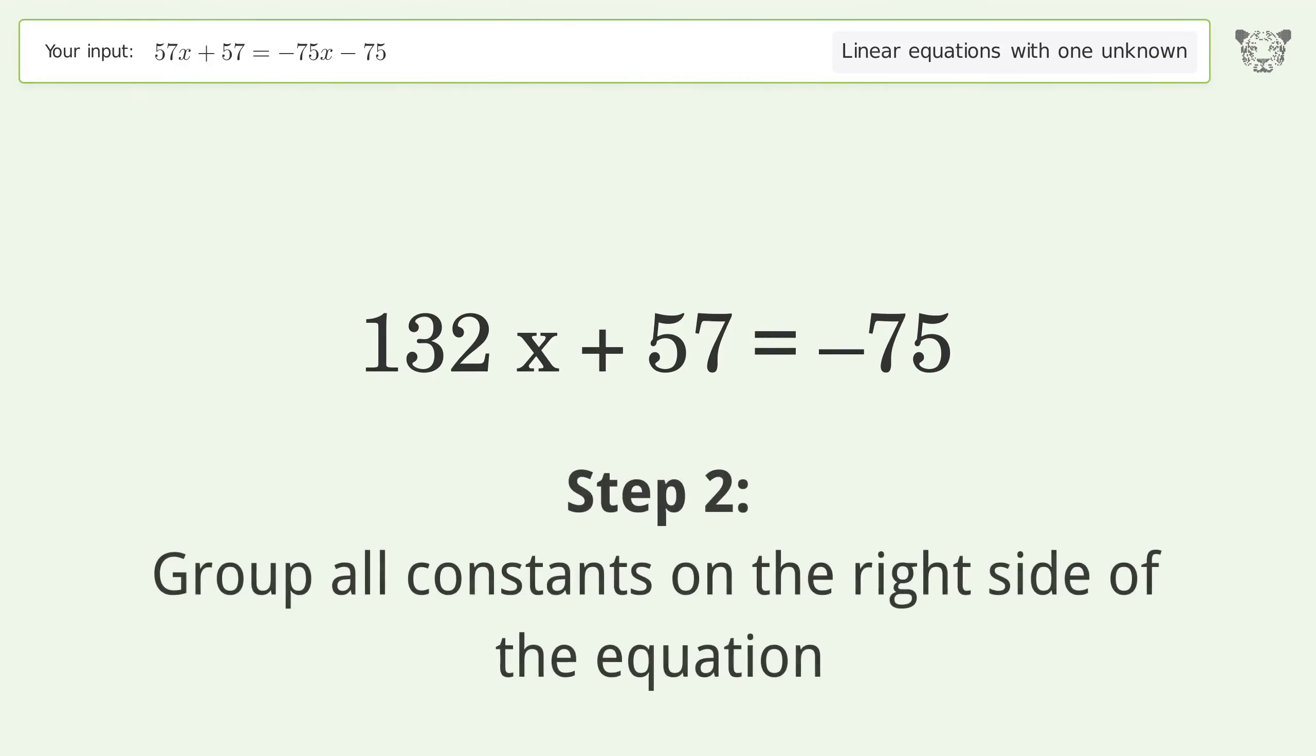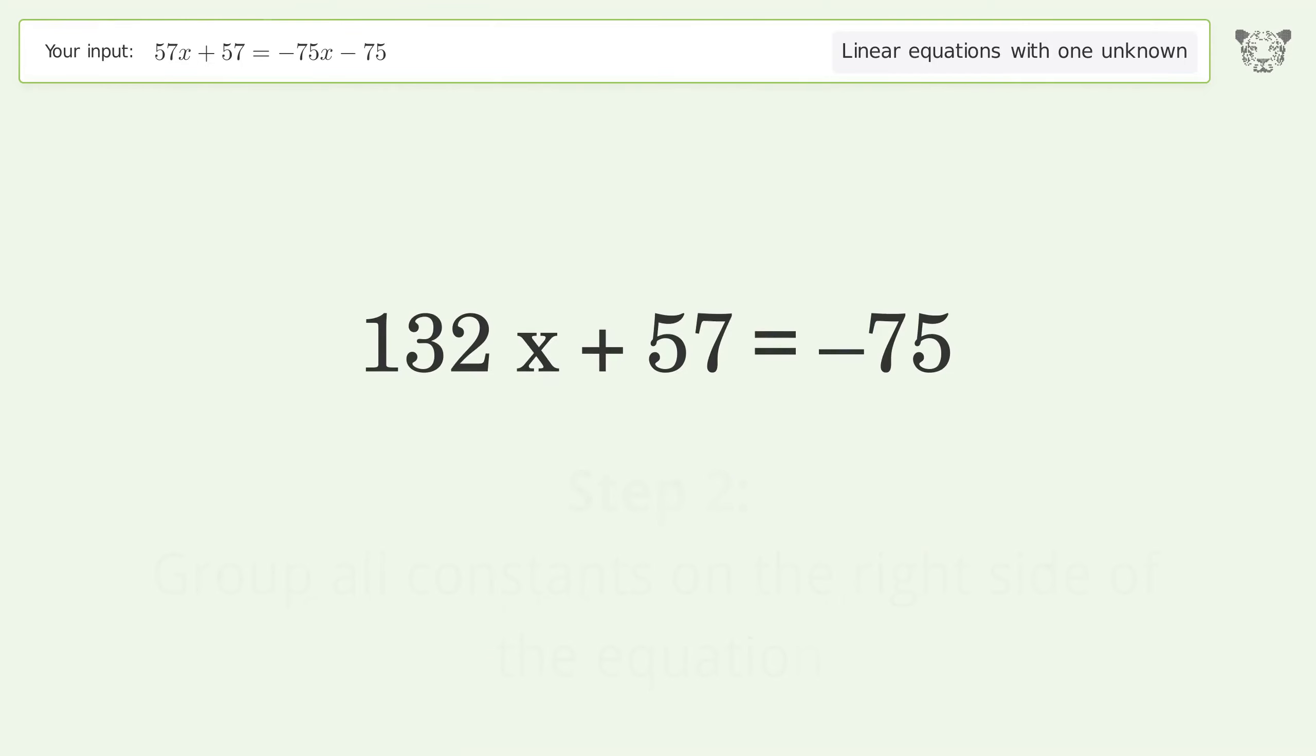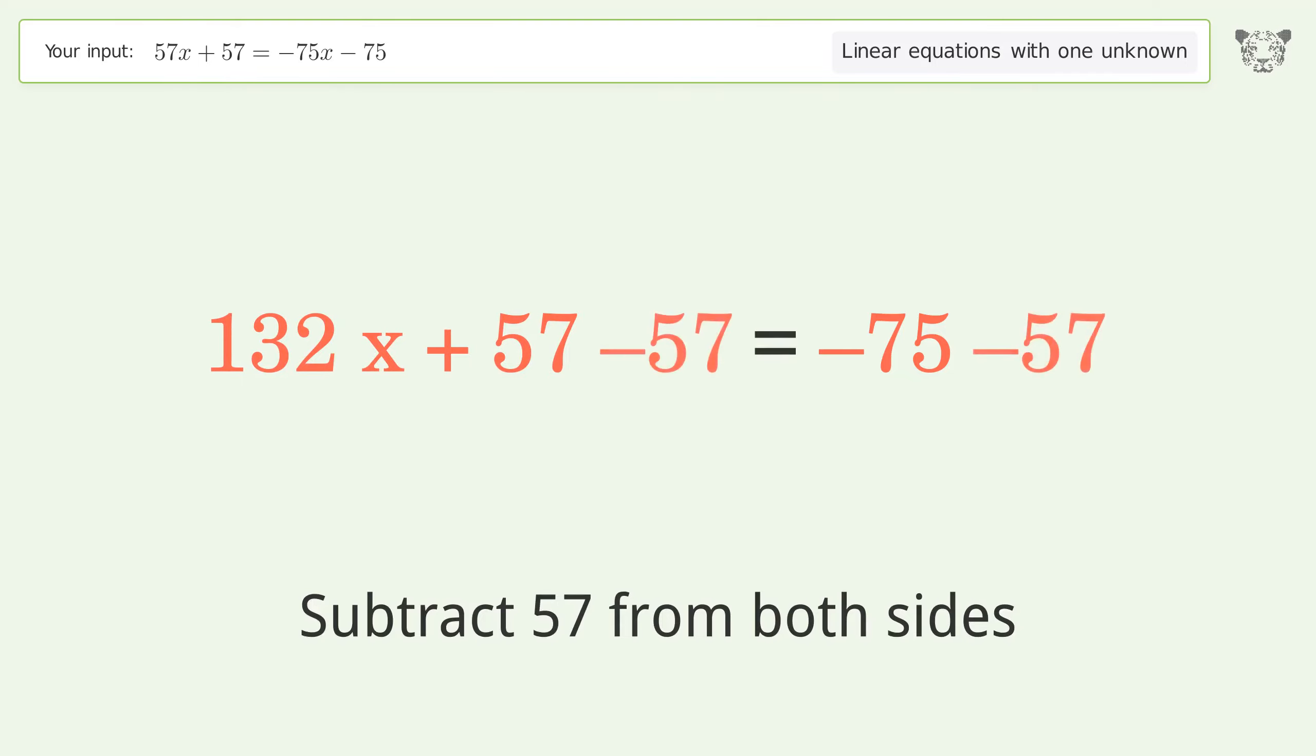Group all constants on the right side of the equation. Subtract 57 from both sides. Simplify the arithmetic.